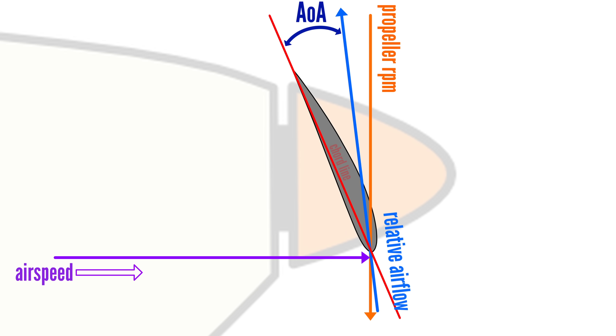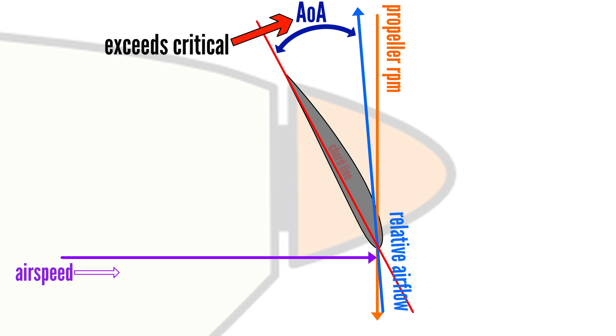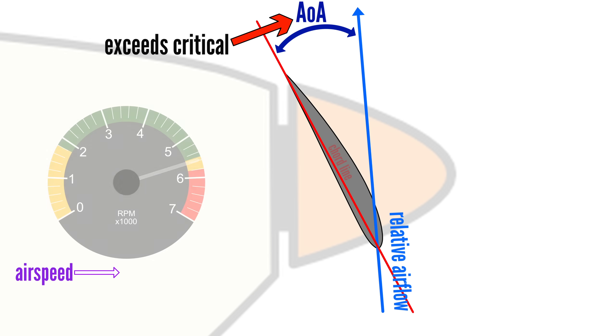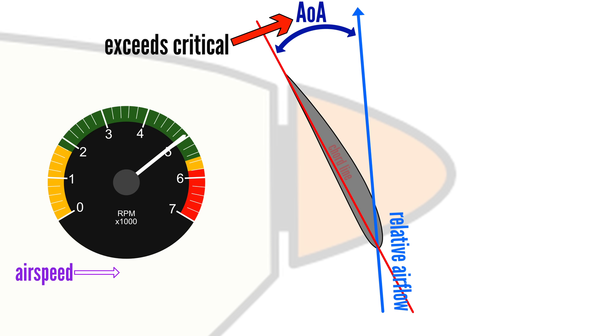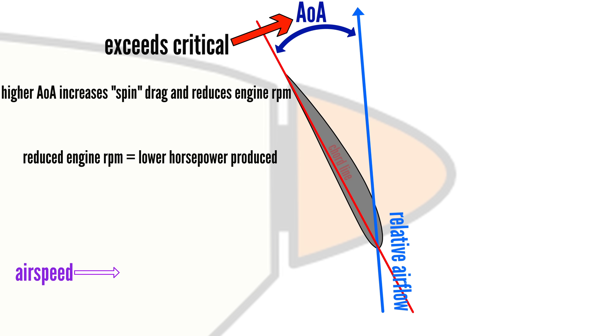On the other hand, a coarse propeller generates less thrust during takeoff due to partially stalled blades, but still heavily loads the engine due to high blade angle of attack, resulting in lower engine RPM. And lower RPM means reduced horsepower. This severely compromises takeoff performance and safety, so blade pitch needs to be set to a compromised middle ground. Not too coarse, but not too fine either.